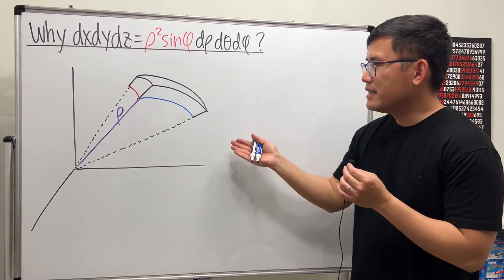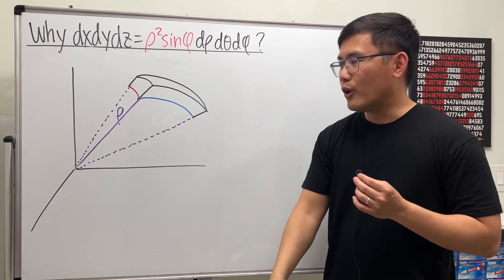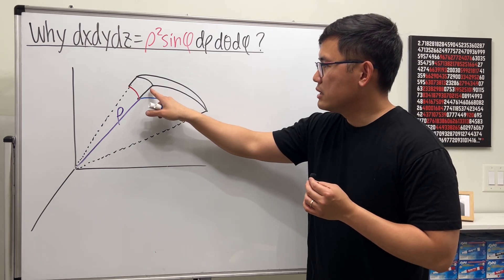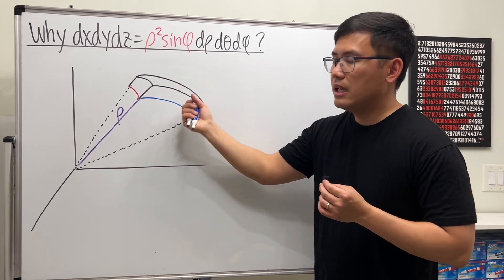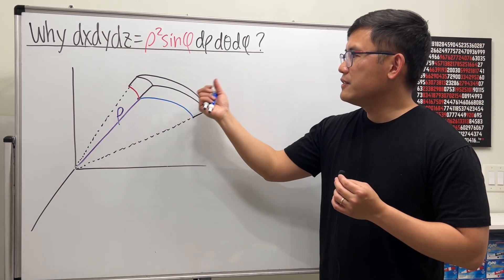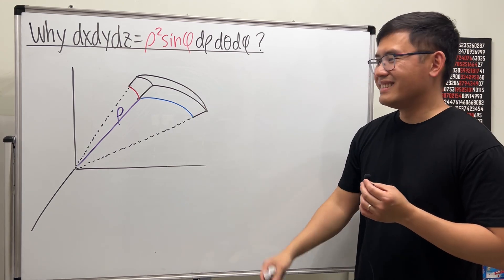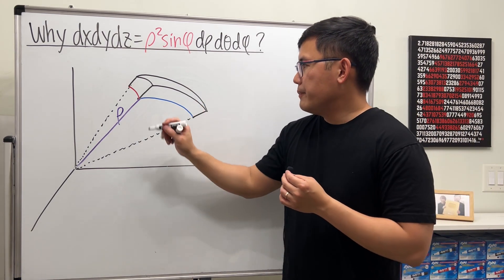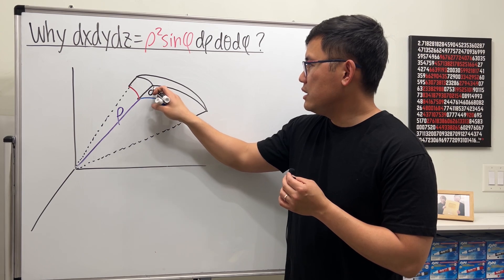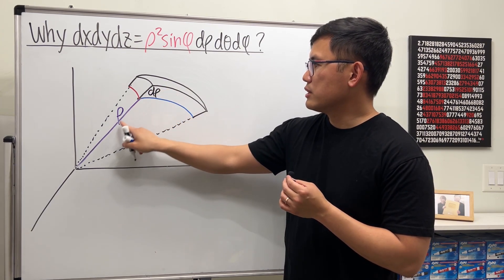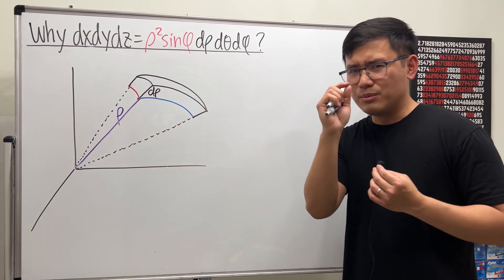To do so, we need to figure out the dimensions - this, this, and that - and multiply them. This volume formula works like a cube. Firstly, we know this right here is just d rho. It's just a small extension of the rho, a small change in the rho.